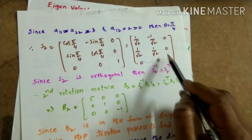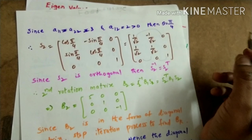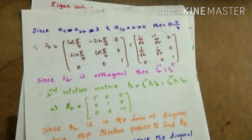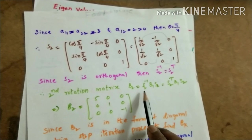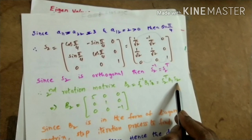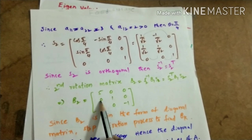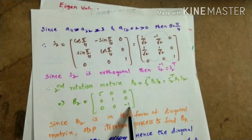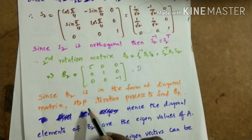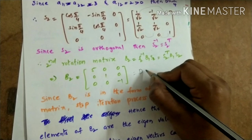We can verify that the columns of S2 are pairwise orthogonal: each pair of columns gives inner product 0, so S2 is an orthogonal matrix and S2⁻¹ = S2ᵀ. We then find B2 = S2ᵀ B1 S2. The product of the three matrices gives B2 = [5, 0, 0; 0, 1, 0; 0, 0, −1], which is a diagonal matrix, so we stop finding rotation matrices.